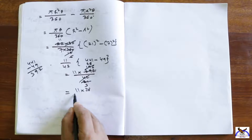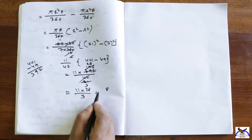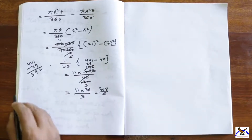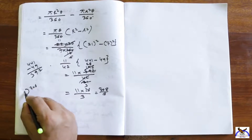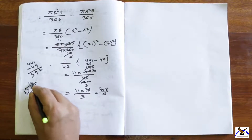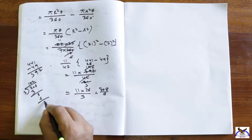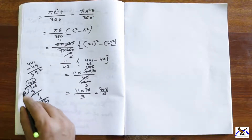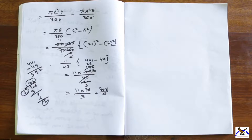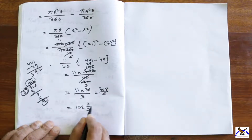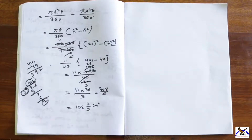Simplifying: 11 into 28 by 3 equals 308 by 3, which equals 102⅔ cm². That is the area of the shaded region. Now let us go to question number 15.